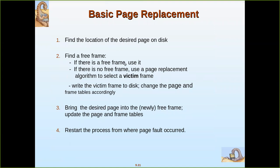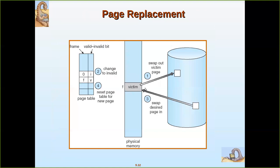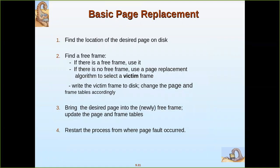The page replacement algorithm selects the victim frame. Once the particular frame which we are going to remove is decided, it is swapped out and the required frame can be brought in. The page can be made valid because it is now available in main memory, and then the respective frame number can be updated. Write the victim frame out, change the page and frame tables accordingly, bring the desired page into the newly free frame, update the page and frame tables, and then the process restarts execution.